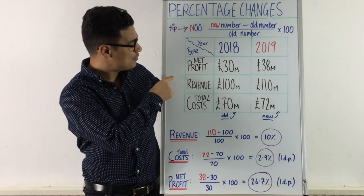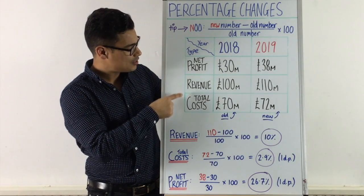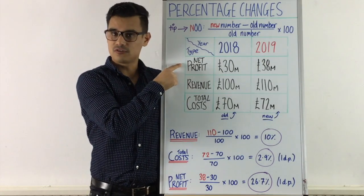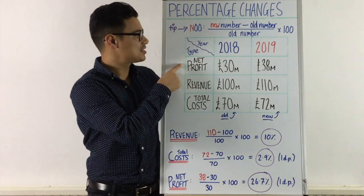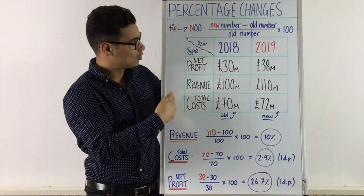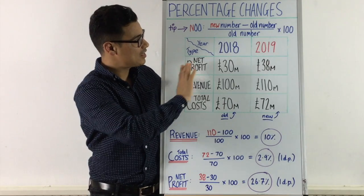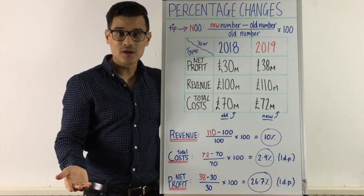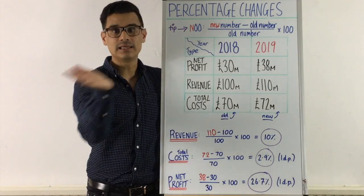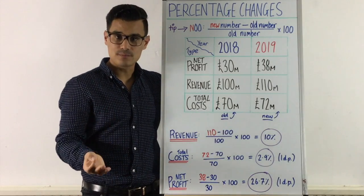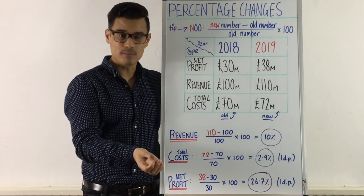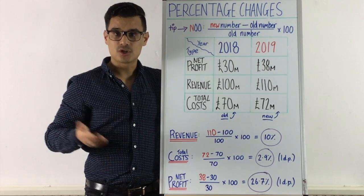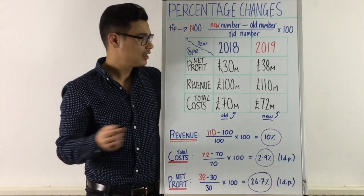So we've got revenue, total costs, and we know that revenue minus total costs equals your profit — your net profit in this case. That's one side of the column. Here we've got 2018 and 2019. 2019 is clearly further in the future, so that would be the new number. 2018 is the old number.